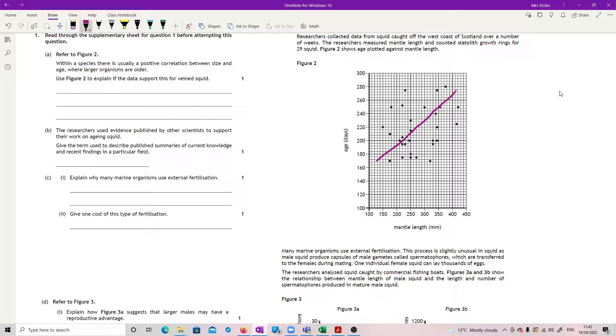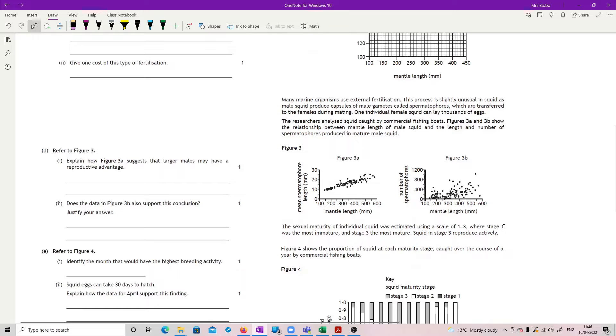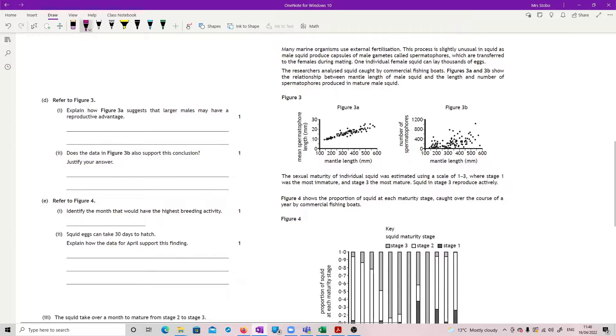Many marine organisms use external fertilization. This process is slightly unusual in squid, as the male squid produce capsules of male gametes called spermatophores, which are transferred to the females during mating. One individual female squid can lay thousands of eggs.